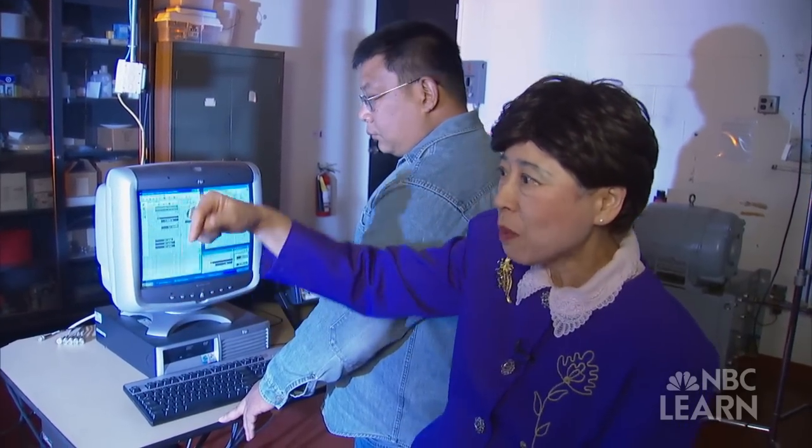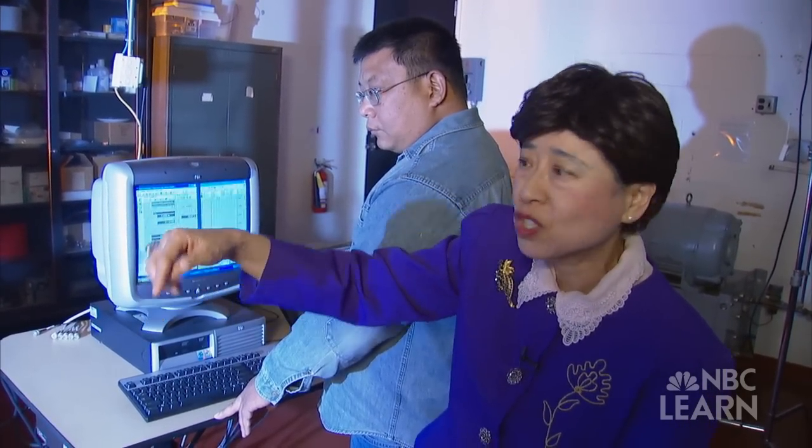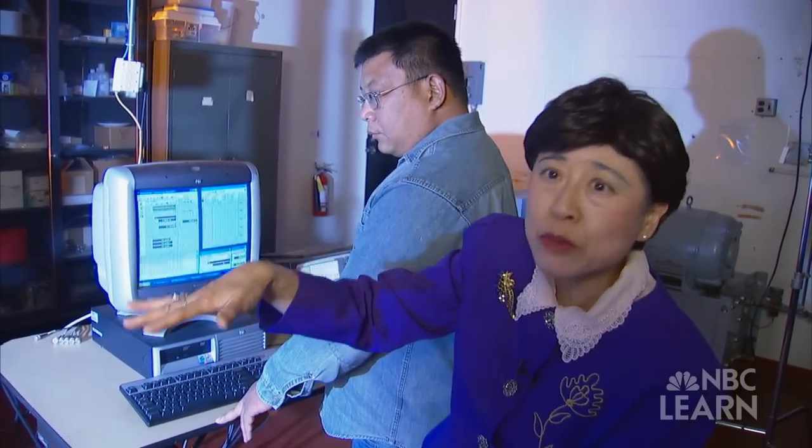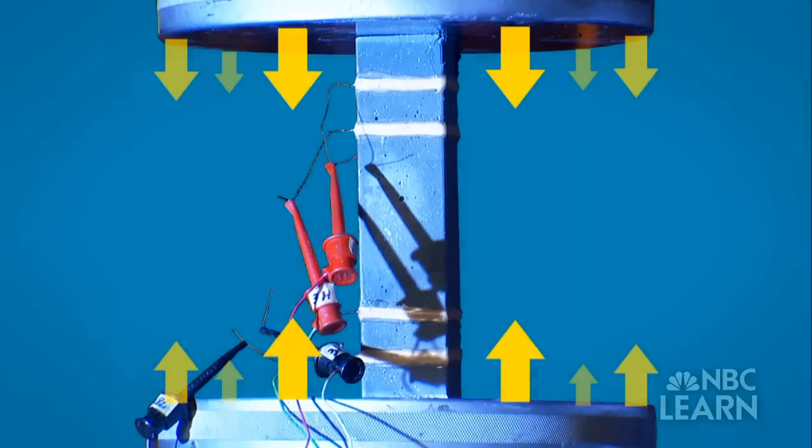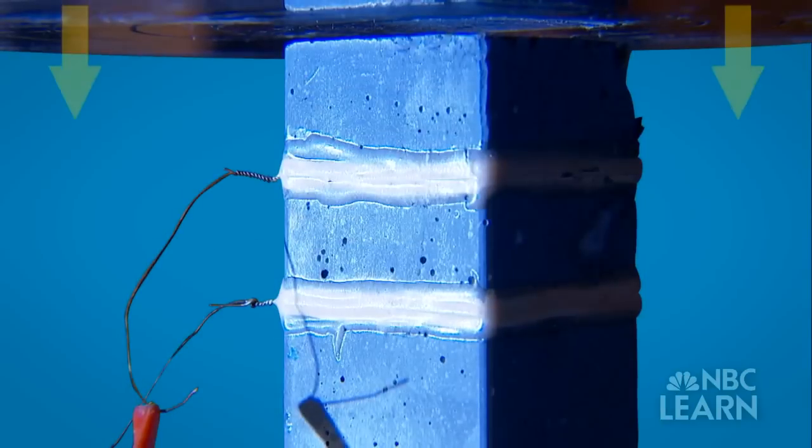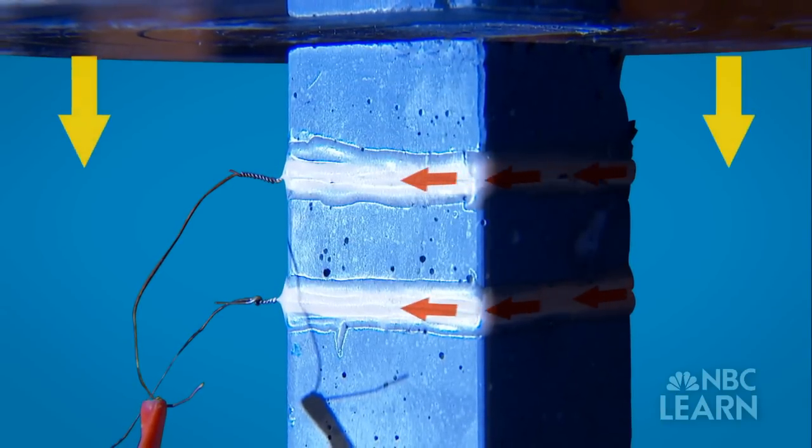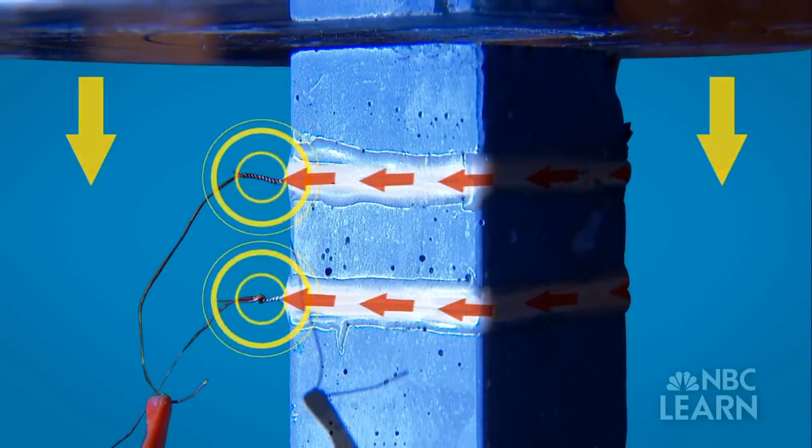As the slab is compressed, the electrical properties of the sample change, causing it to become slightly more conductive as the electrical resistance decreases.